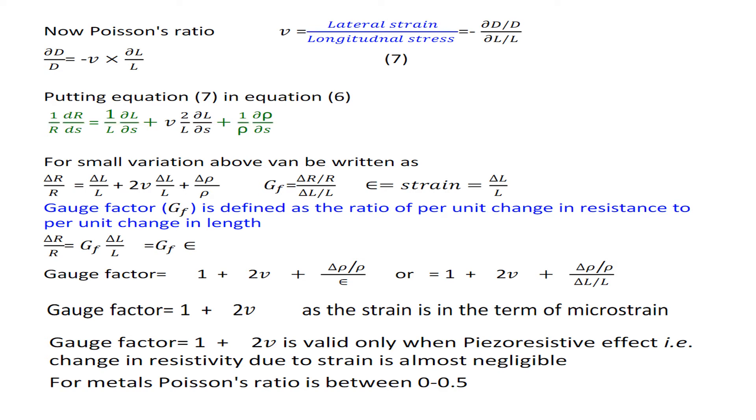Putting equation 7 in equation 6, we get 1/R dR/dσ = 1/L dL/dσ + 2ν/L dL/dσ + 1/ρ dρ/dσ. For small variation, above can be written as ΔR/R = ΔL/L + 2ν ΔL/L + Δρ/ρ.